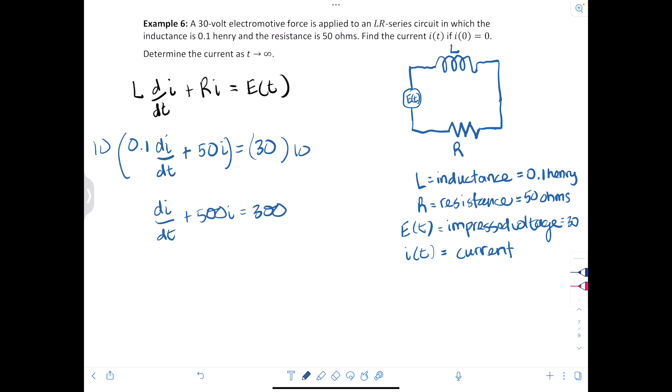Now we have to find our integrating factor for this. So our integrating factor, because this is linear in form, is going to be e to the integral. The coefficient in front of the I is 500 dt, which is e to the 500t.